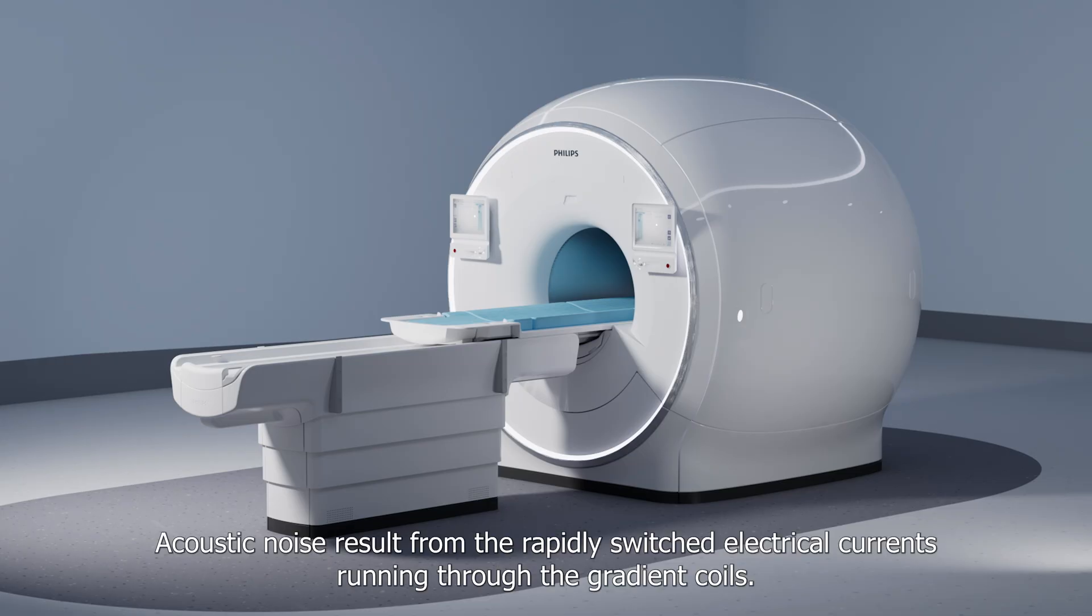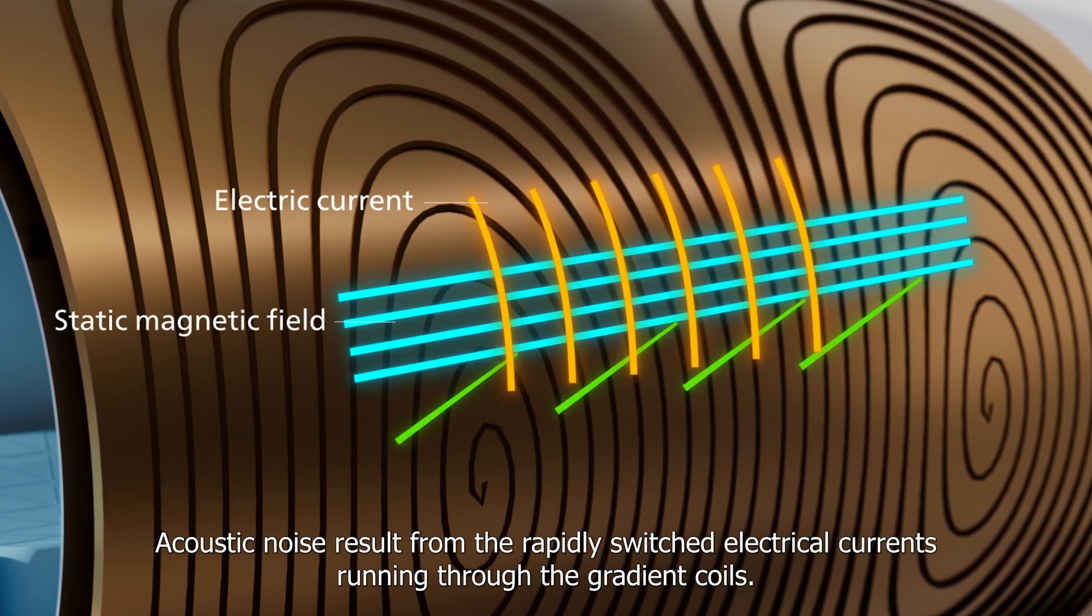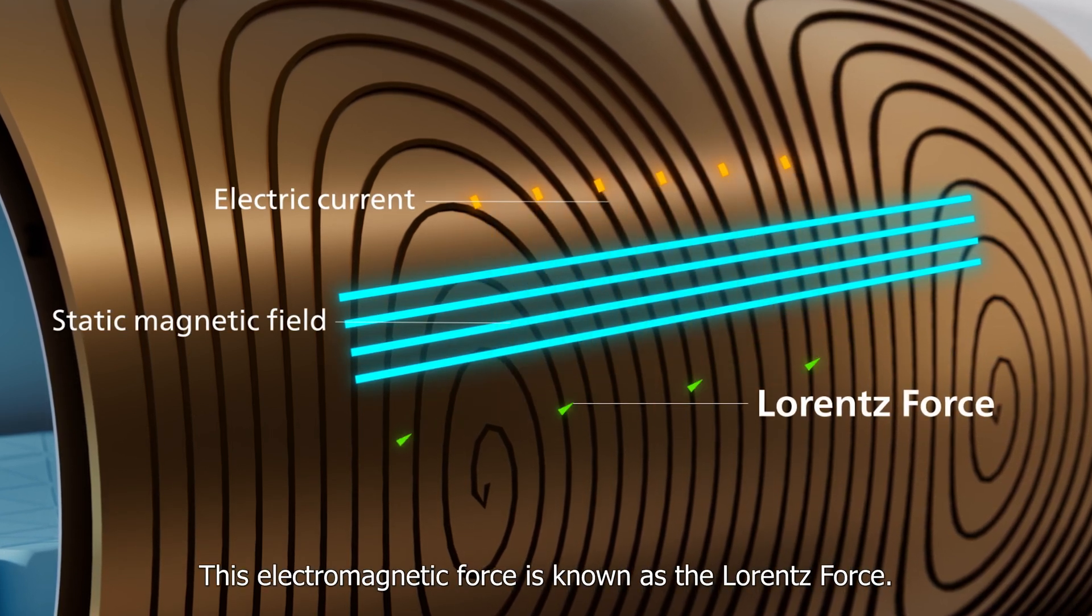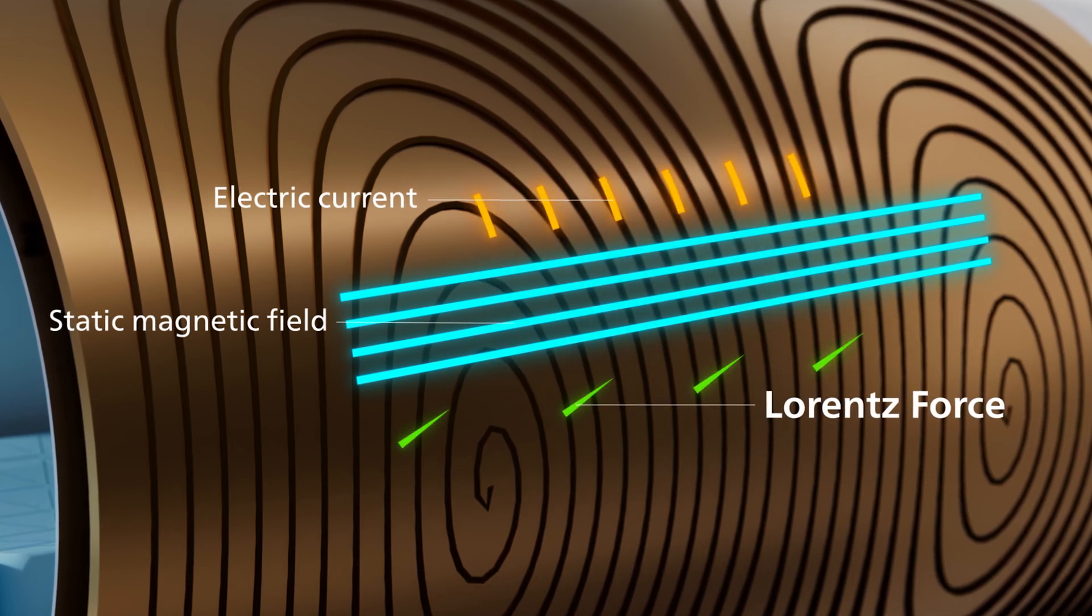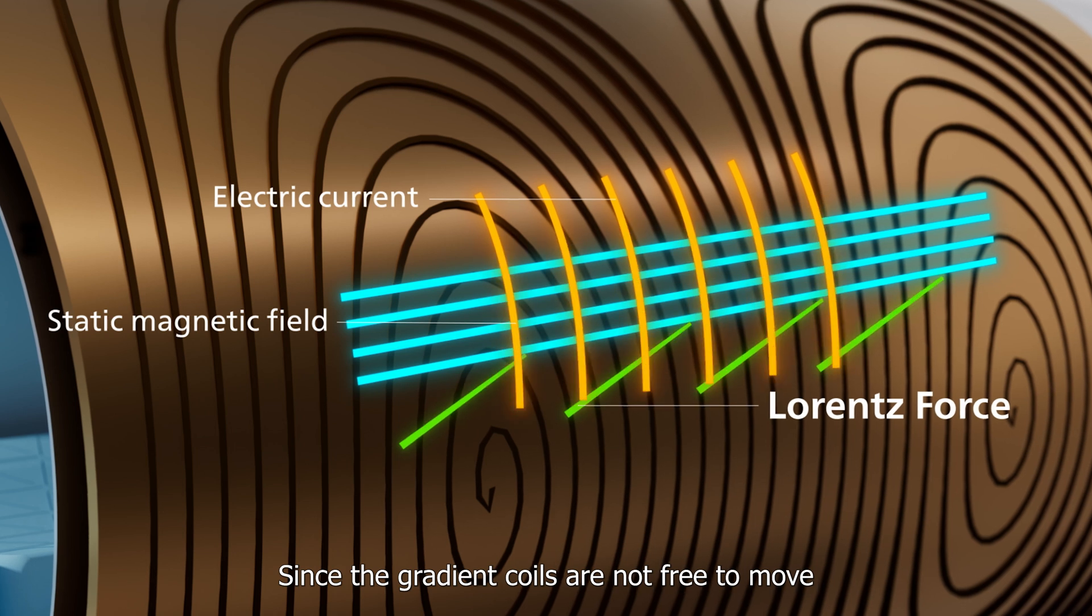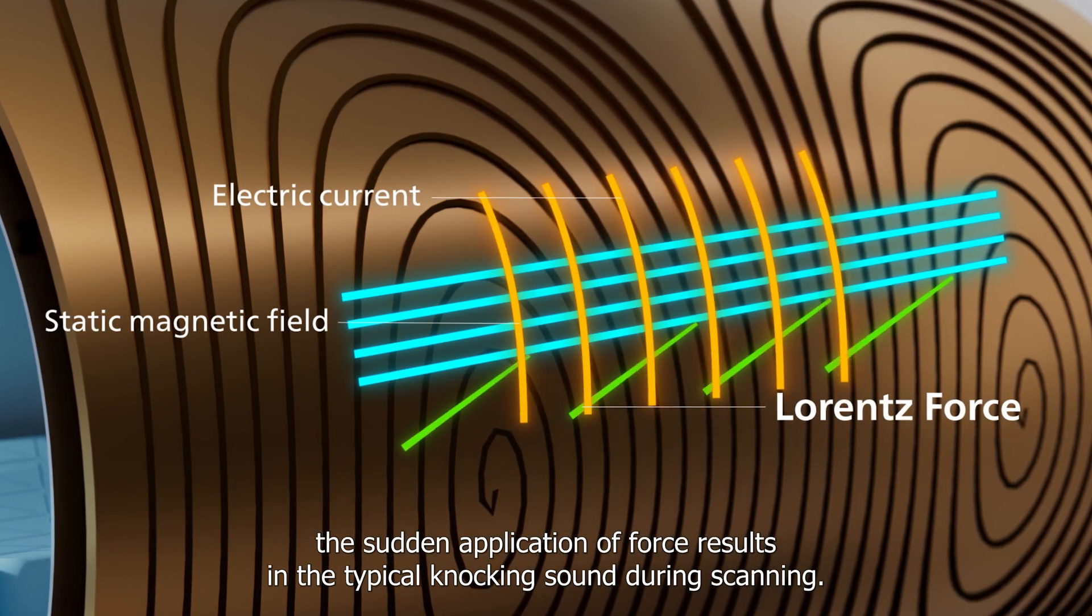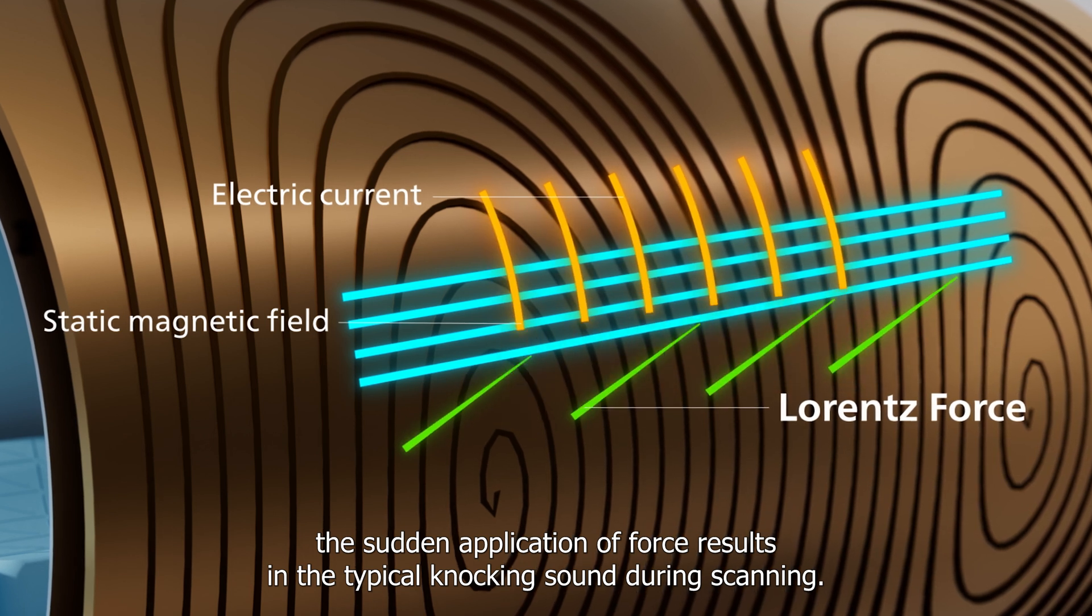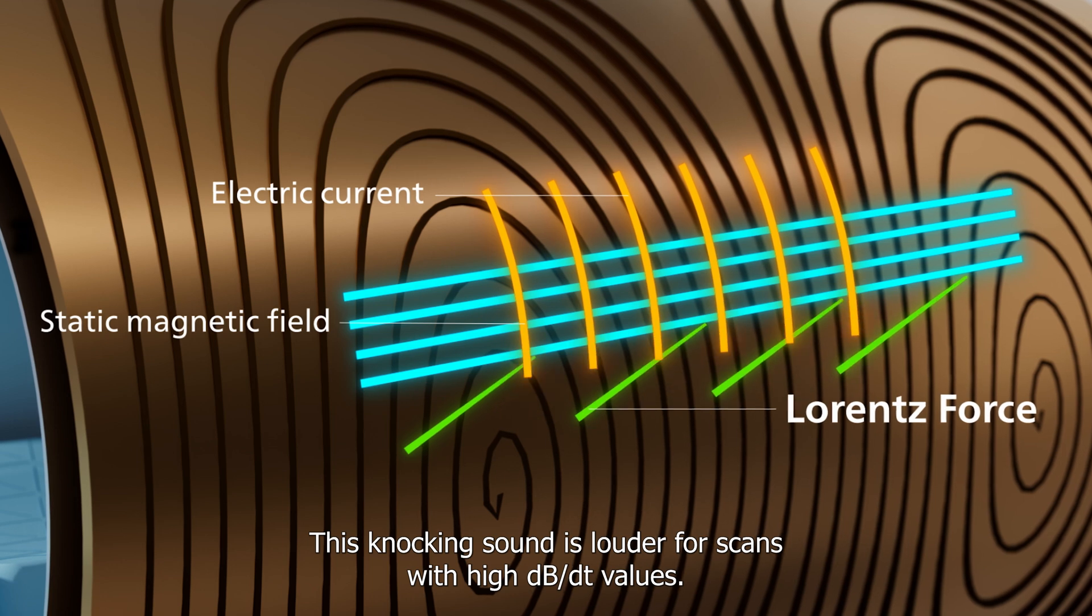Acoustic noise results from the rapidly switched electrical currents running through the gradient coils. This electromagnetic force is known as the Lorentz force. Since the gradient coils are not free to move, the sudden application of force results in the typical knocking sound during scanning. This knocking sound is louder for scans with high dB/dt values.